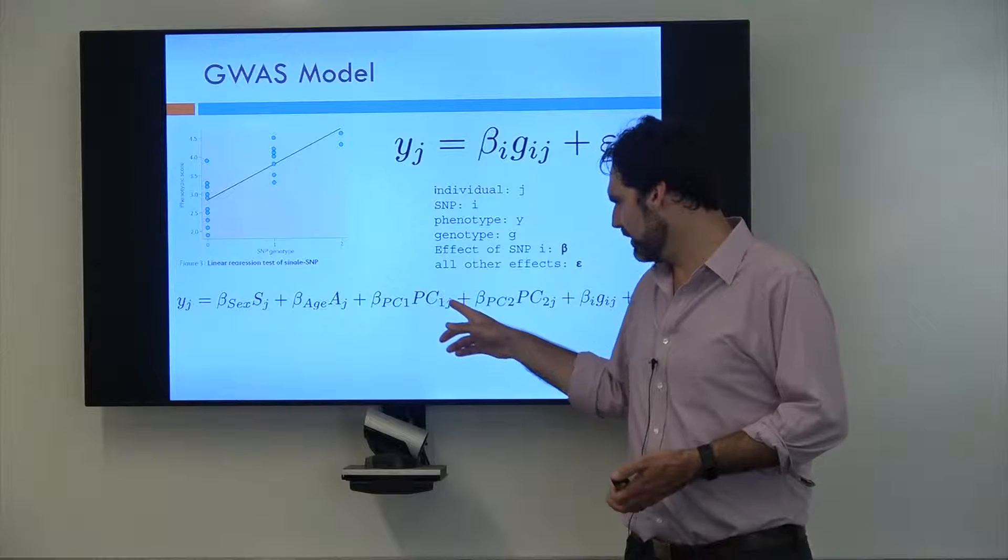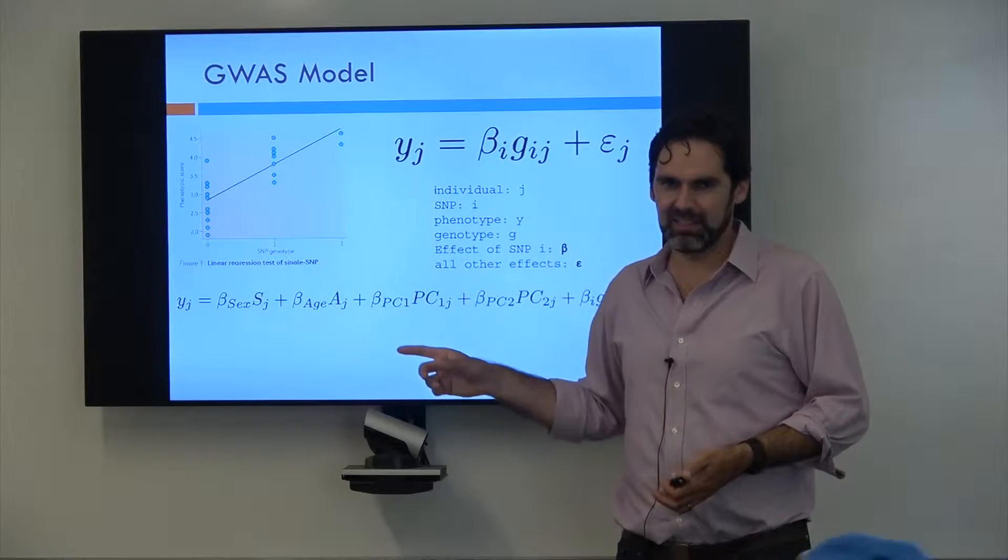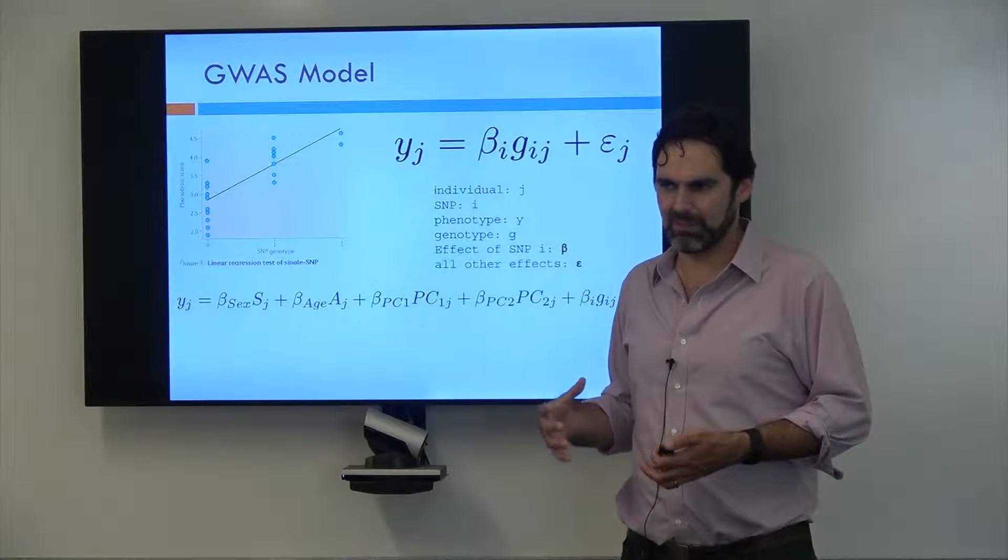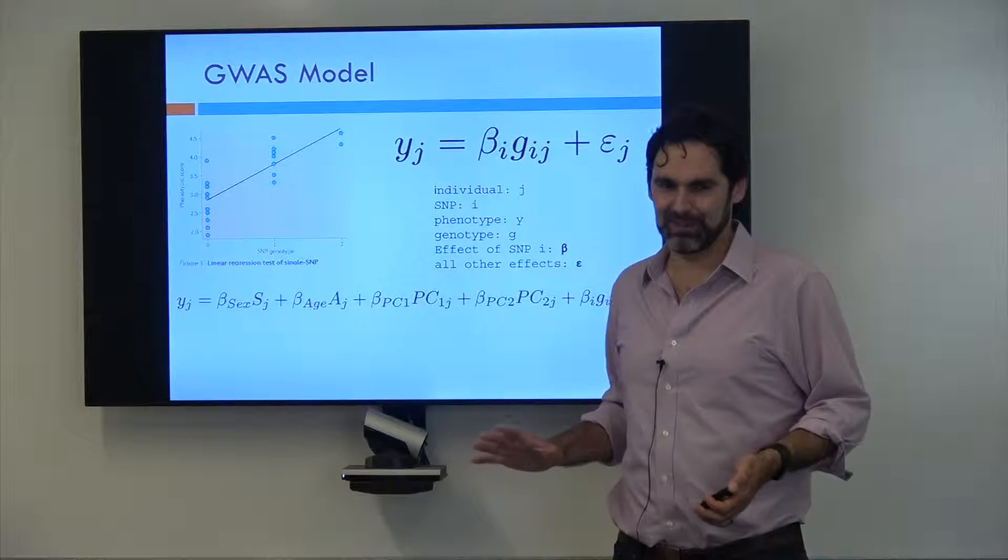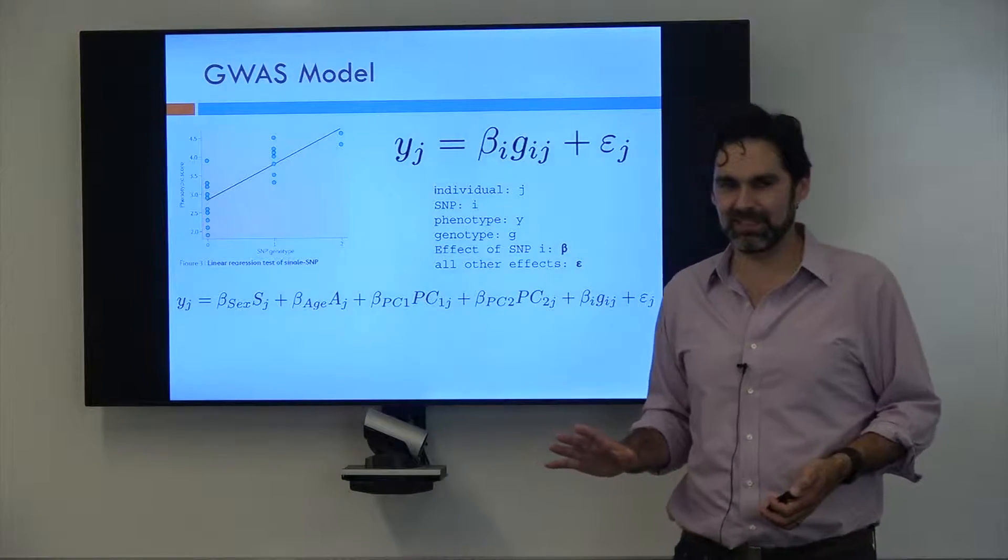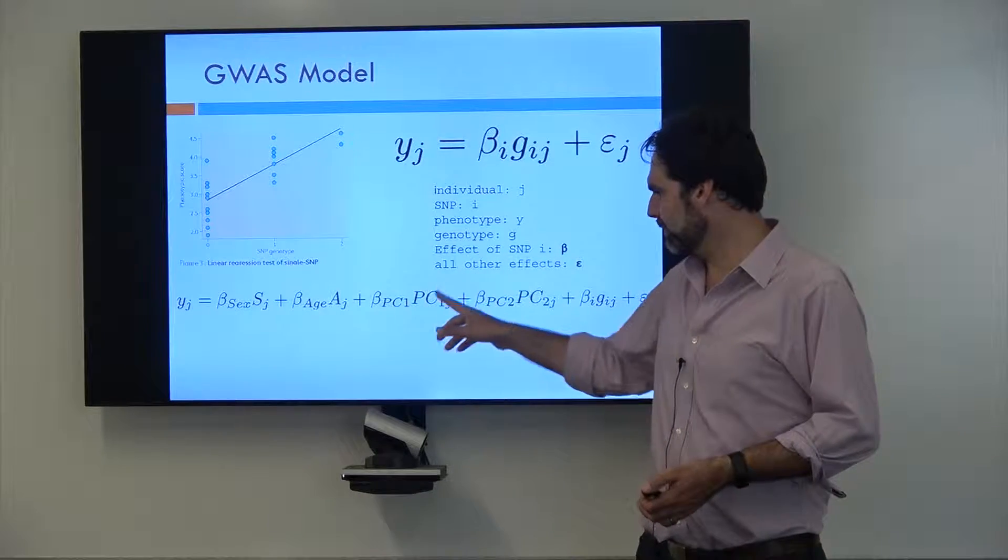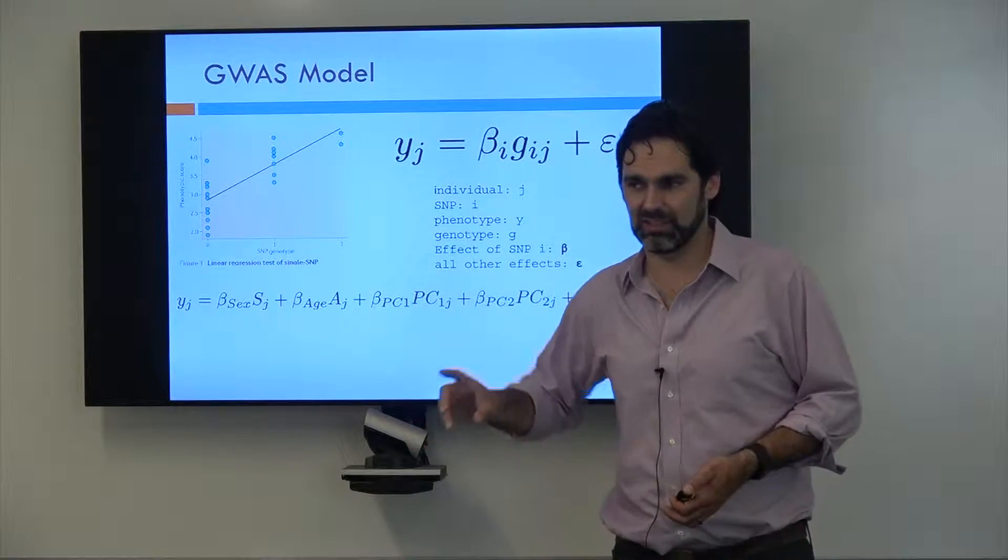What they're referring to are what are called principal components, and these are the principal components of the genotype matrix. If that means nothing to you, don't worry about it. What you really need to know is that principal components capture population structure.